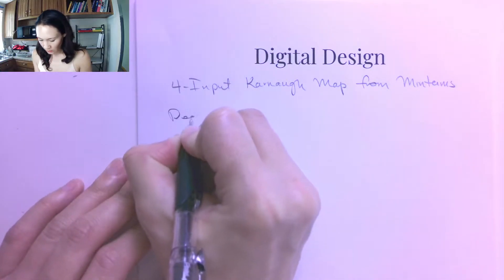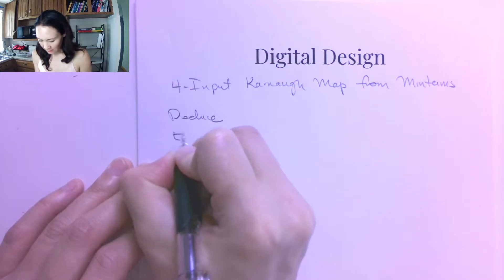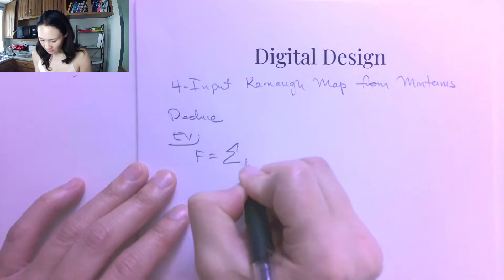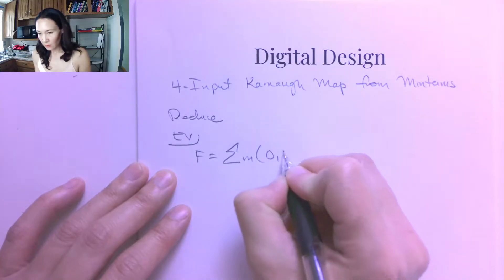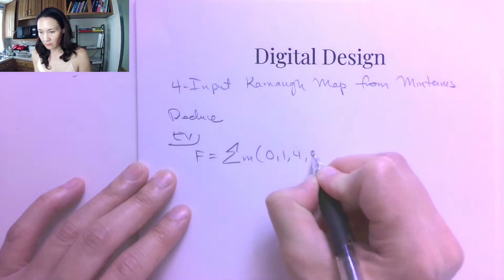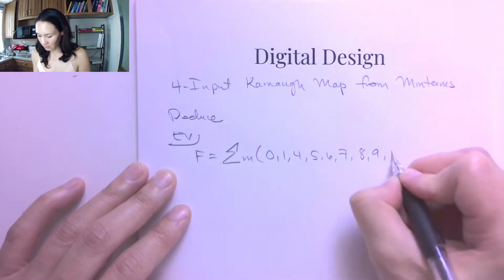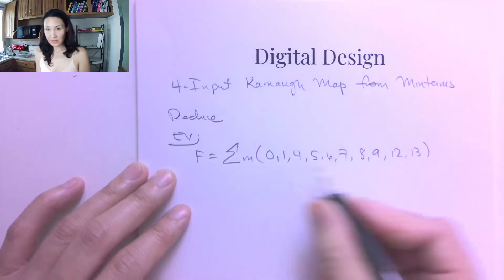So if we want to reduce, let's say for example, our function is the sum of minterms 0, 1, 4, 5, 6, 7, 8, 9, 12, 13. So this is a lot of terms.